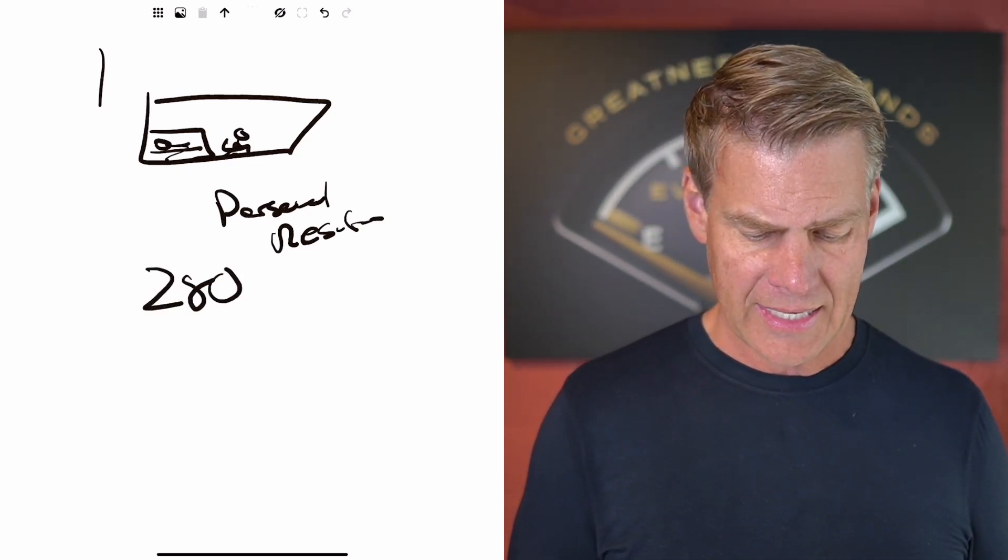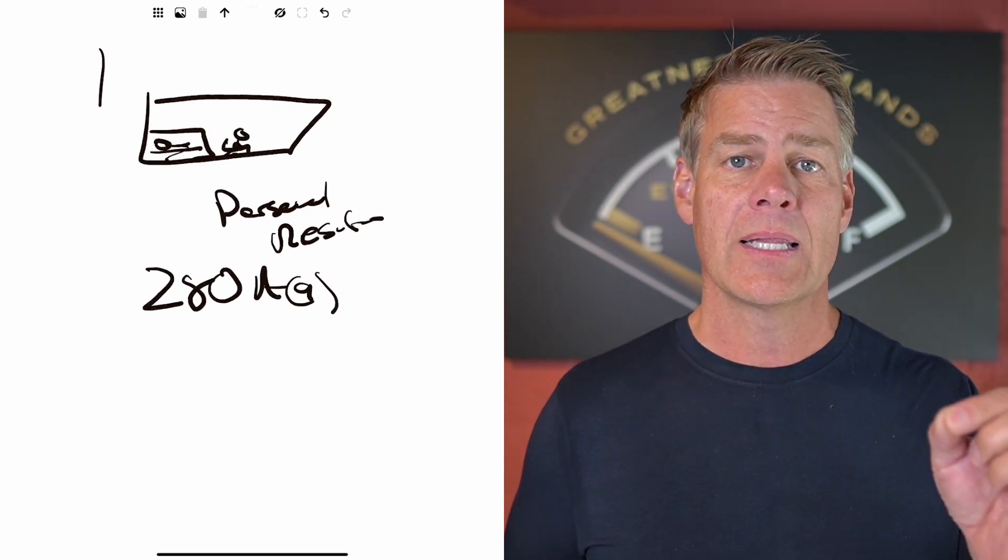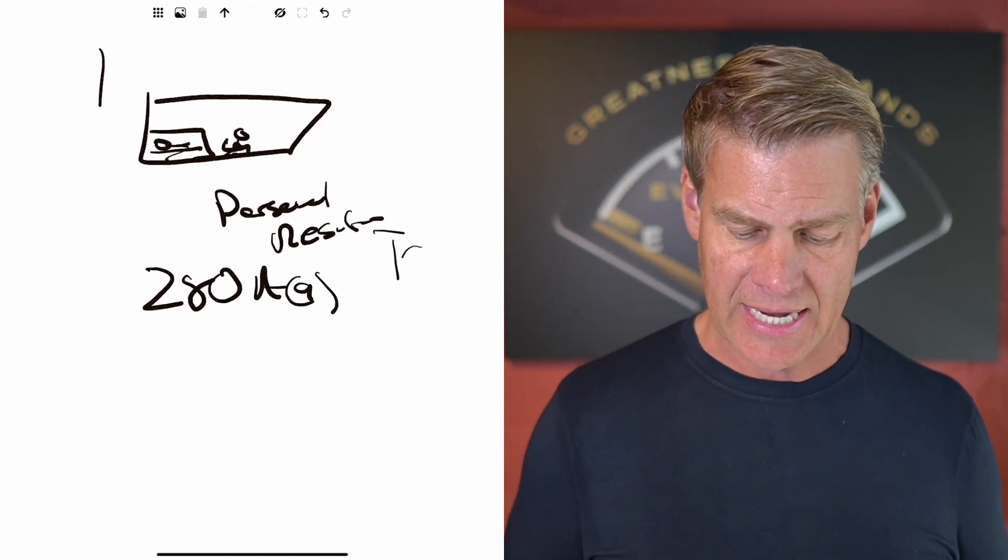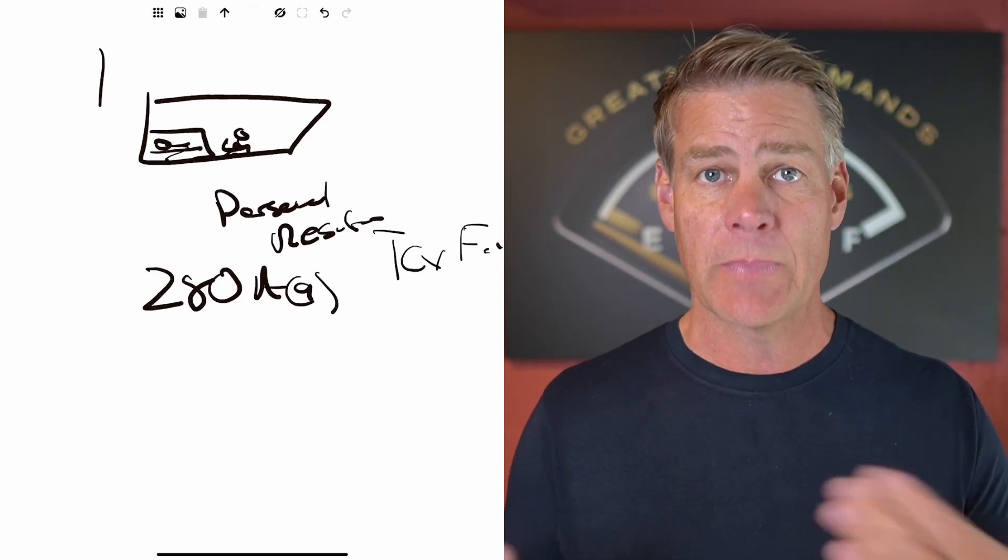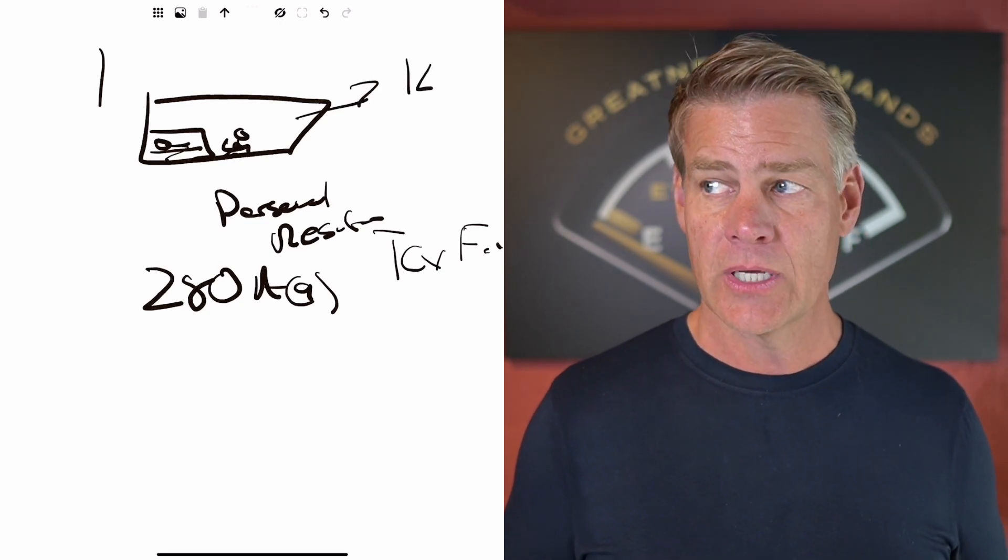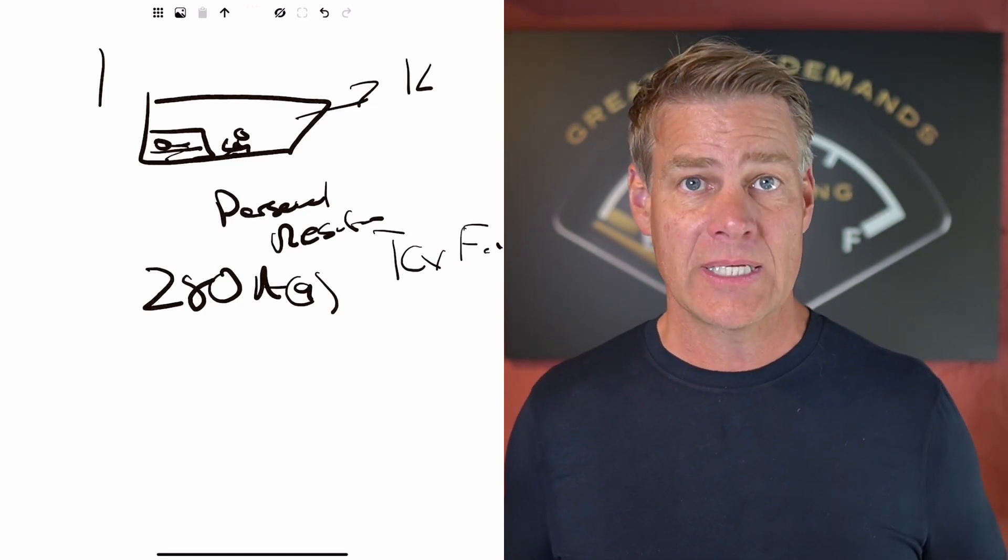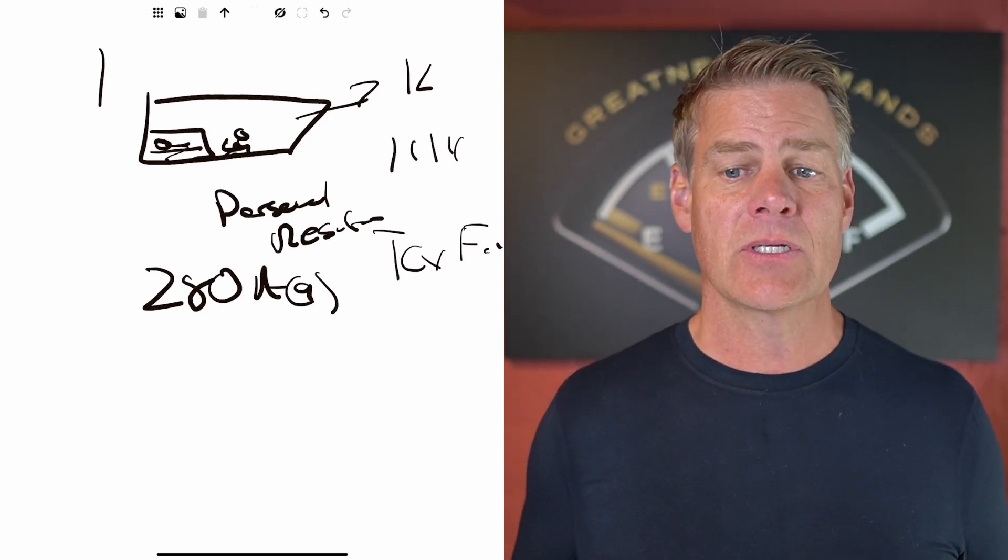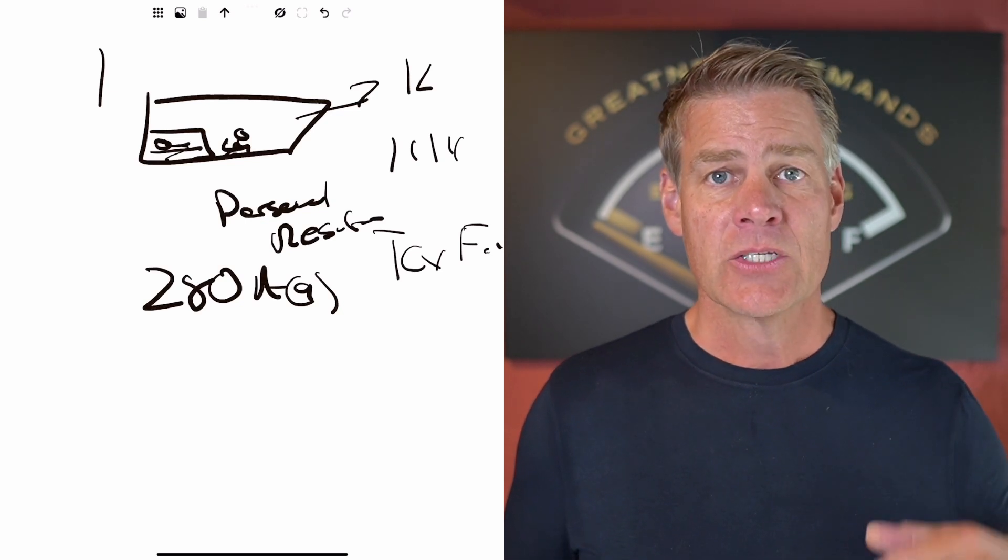You know, with section 280A, subsection G, if you rent your house out for less than 14 days a year, any income you generate is completely tax free. So what you could do with this boat is you could list it on one of those services where people can rent, where people will rent boats. And let's say I list mine out for $1,000 a day. And I do it for 14 days out of the year. That's it. I just do it 14 days. Once I quit, then that $14,000 is completely tax free to me. So that's a way to do it.